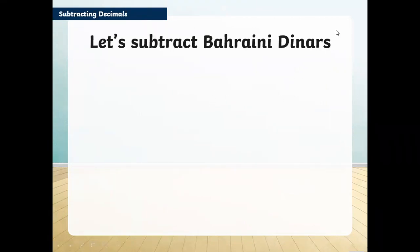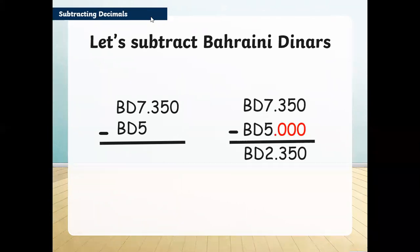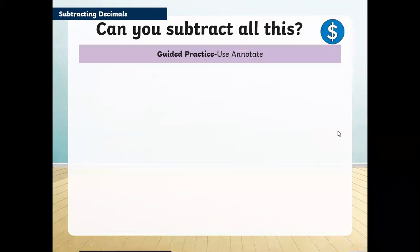Now let's subtract some Bahraini dinars. This is BD 7.350 and we're subtracting BD 5. First, we put the placeholder zeros like this, then subtract starting from the right side. 0 minus 0 is 0, 5 minus 0 is 5, 3 minus 0 is 3, and 7 minus 5 is 2. This was very simple. Start from the right and keep on subtracting.